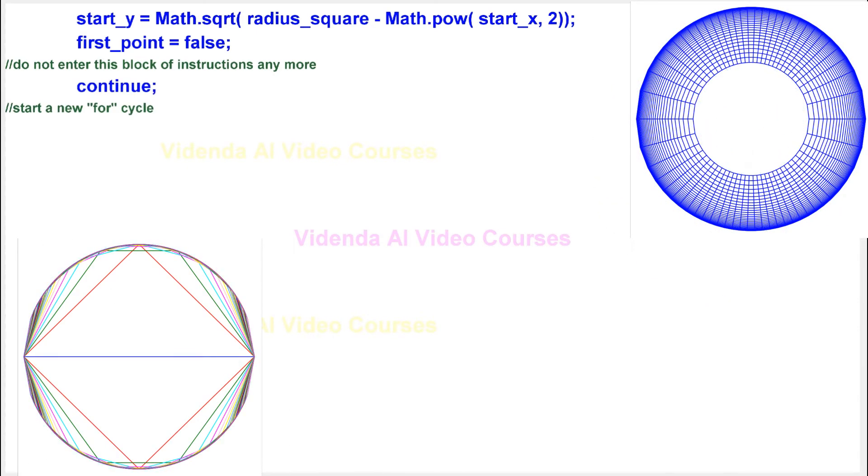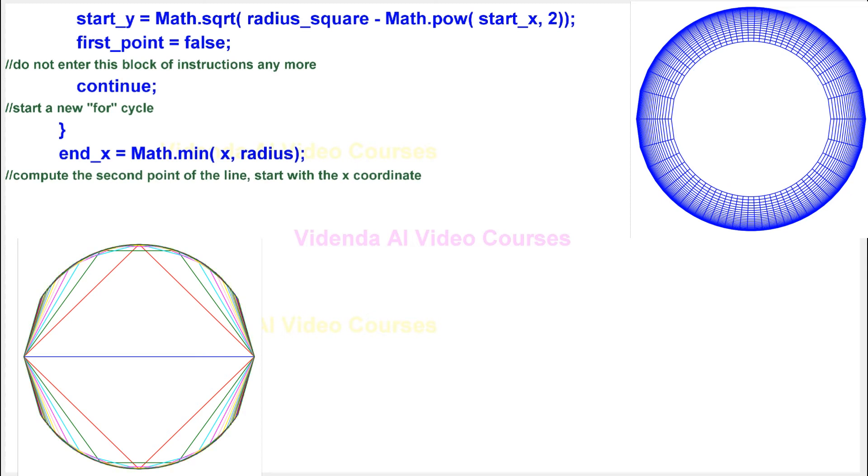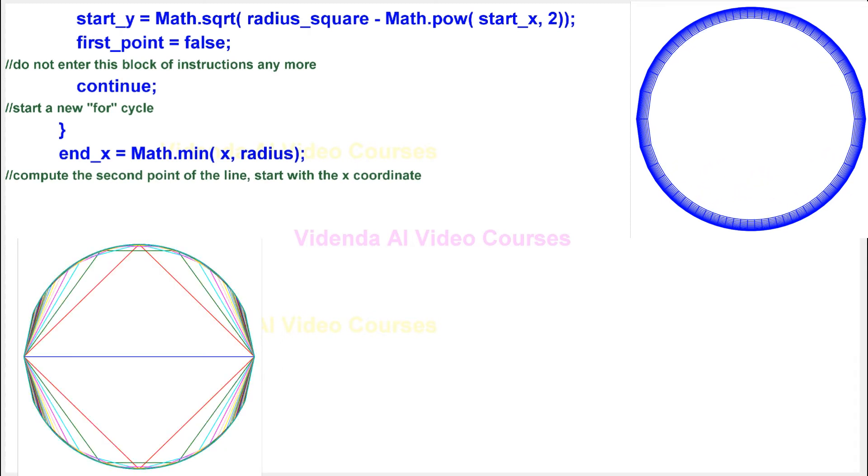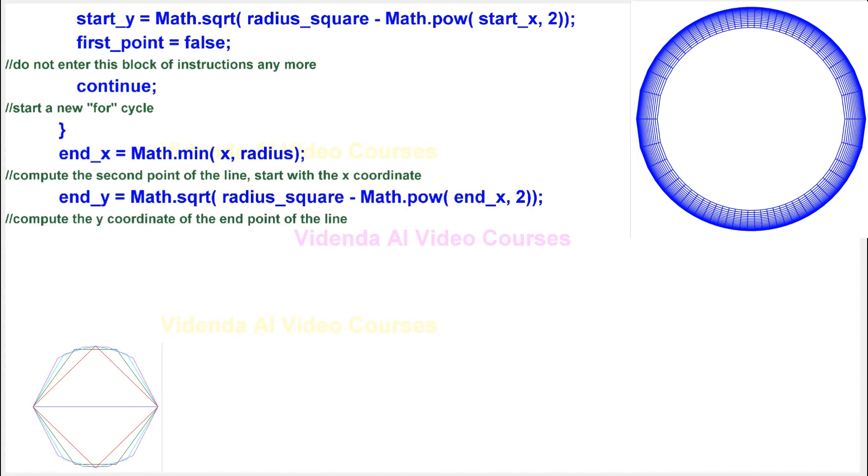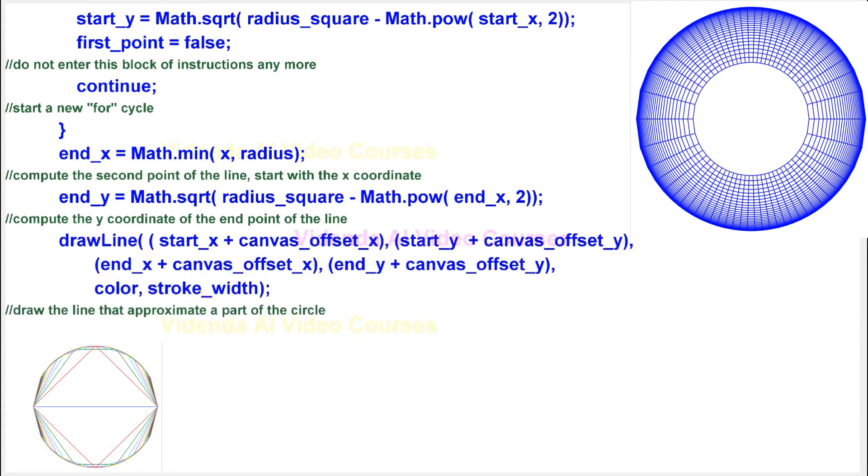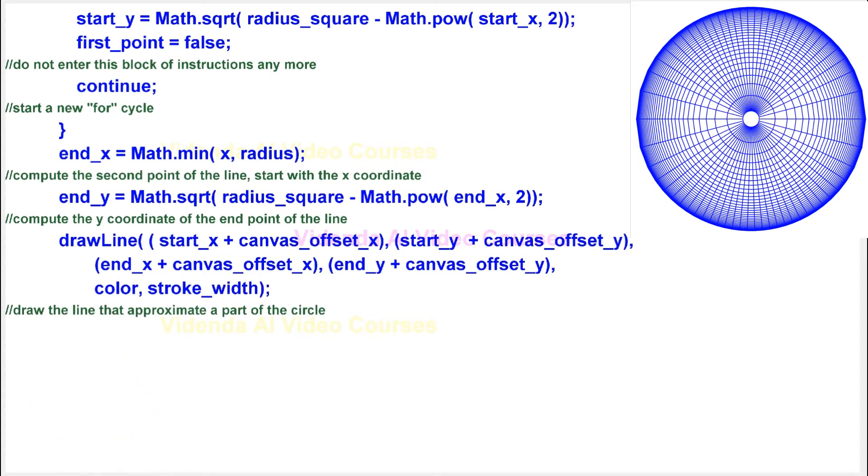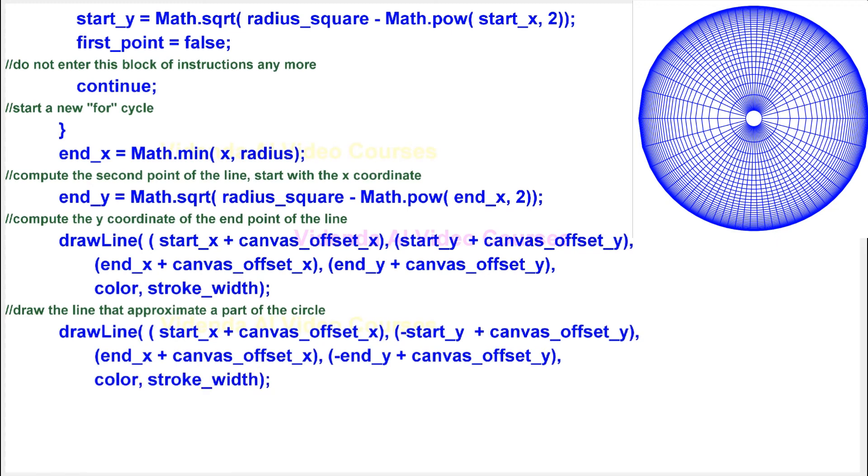Start a new for cycle. Compute the second point of the line. Start with the x-coordinate. Compute the y-coordinate of the end point of the line. Draw the line that approximates a part of the circle. Mirror the line on the other part of the x axis.